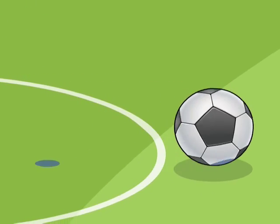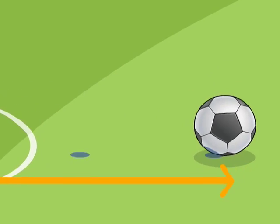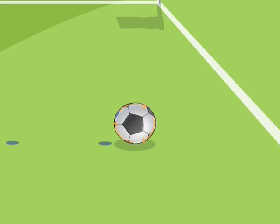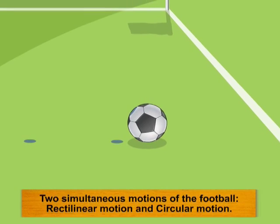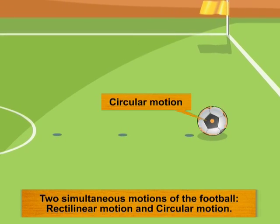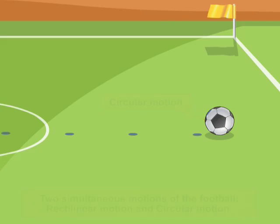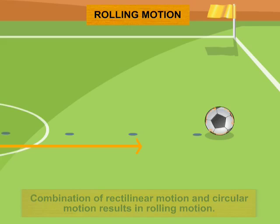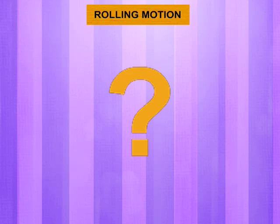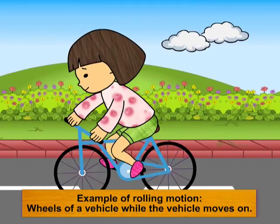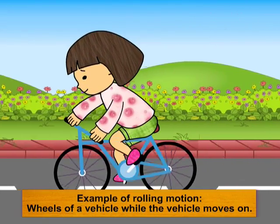An ink dot marked on the football moves ahead along a straight path. Also, while the football rolls on the surface, the point moves along a circular motion. The football moves ahead with two motions happening simultaneously: rectilinear (straight-line) motion plus circular motion about the center of the football. Such a motion is called rolling motion — a combination of straight-line motion and circular motion. The wheels of a bicycle or any vehicle also undergo rolling motion while the vehicle moves forward.